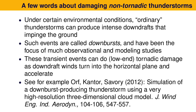A few words about non-tornadic thunderstorms. Under certain environmental conditions, ordinary air mass thunderstorms can actually produce damaging winds getting into the tornado strength — winds in excess of 80 meters per second at the high end. These events are called downbursts, and they have been the focus of both observational and numerical modeling studies. These events can cause tornadic damage in some cases. We worked on a paper taking a full cloud model to understand what leads to these downbursts.